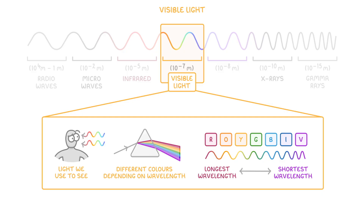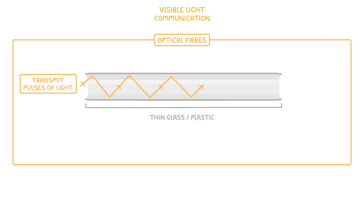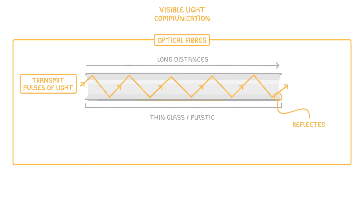As well as using it to look at things, visible light can also be used for communication using optical fibers. These are thin glass or plastic fibers that are able to transmit pulses of light over long distances because the light is reflected every time it hits the surface and so ends up bouncing back and forth throughout the entire journey until it emerges at the other end of the fiber where it can be interpreted.